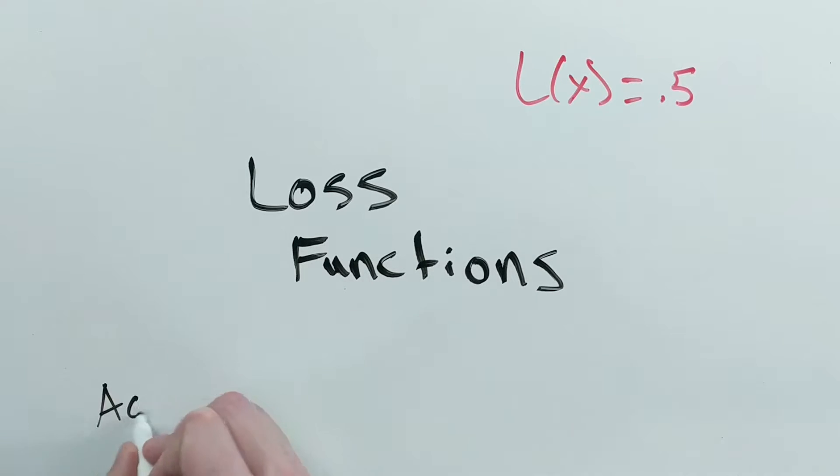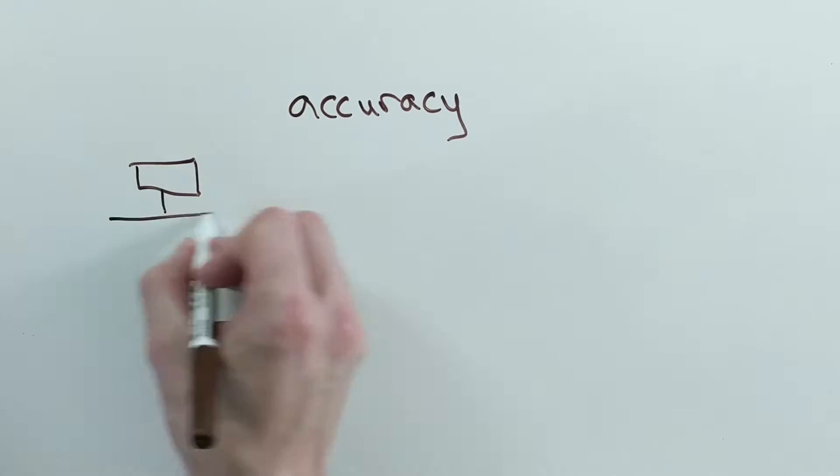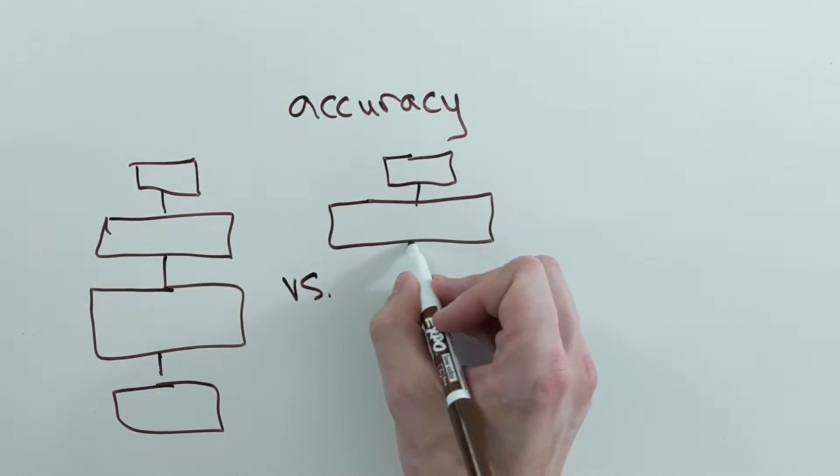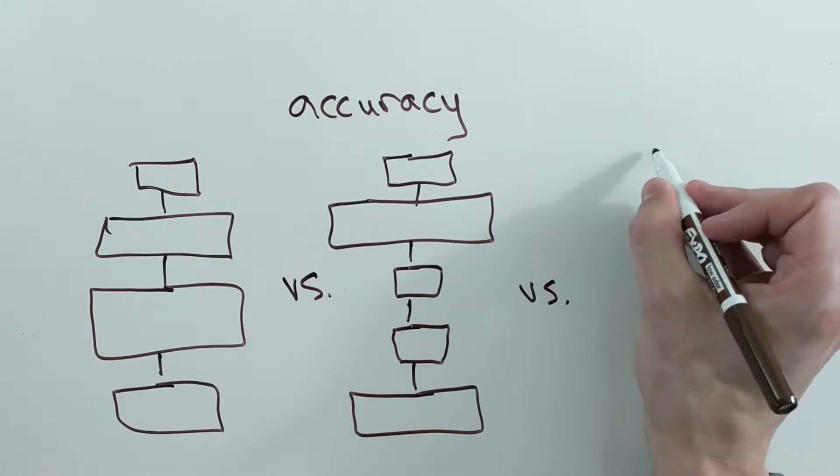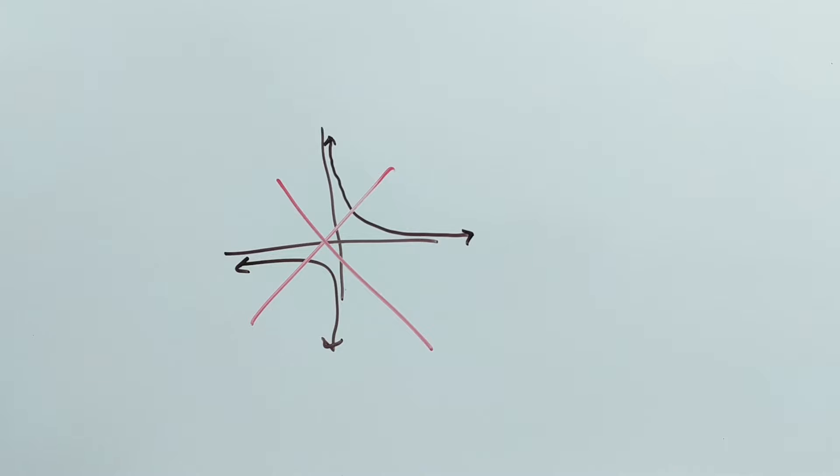But wait, what about accuracy, precision, and recall? Can't we just use those to figure out how wrong our predictions are? While we can use metrics such as accuracy to get an idea of how wrong our predictions are and to compare various methods and models, they often fail for use during optimization because they aren't differentiable.